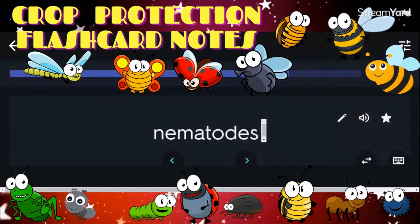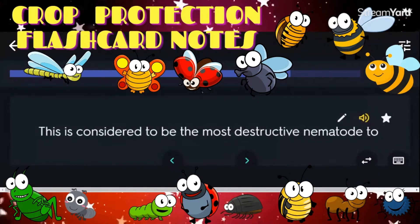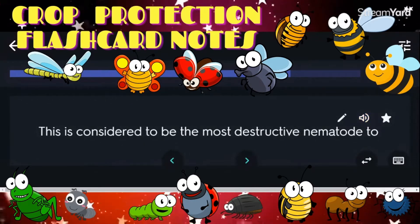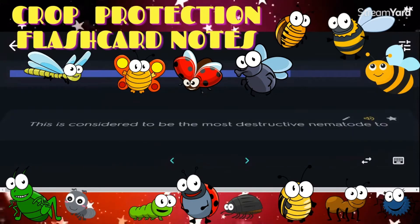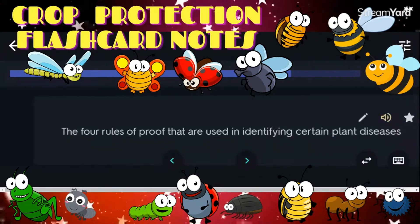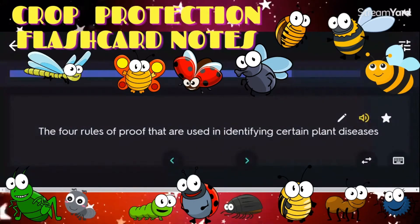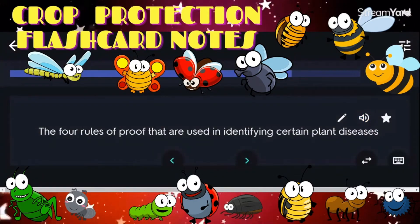This is considered to be the most destructive nematode: Meloidogyne. The four rules of proof used in identifying certain plant diseases are Koch's postulates.